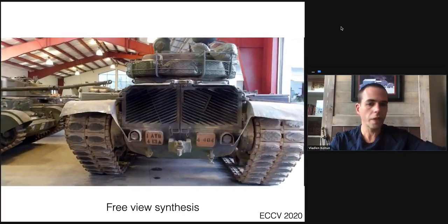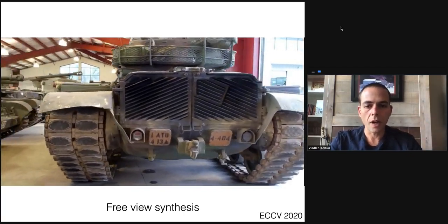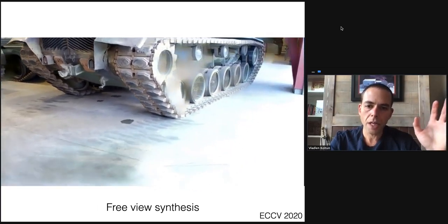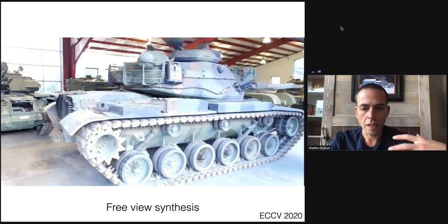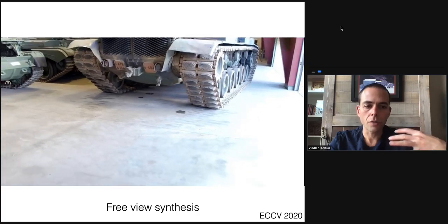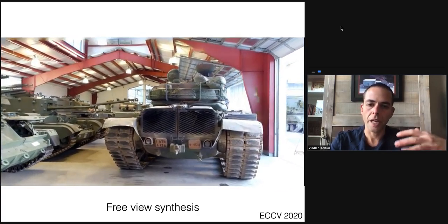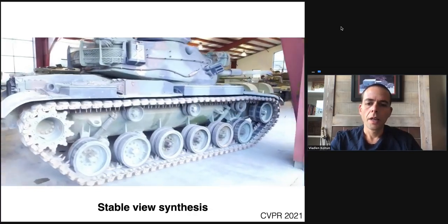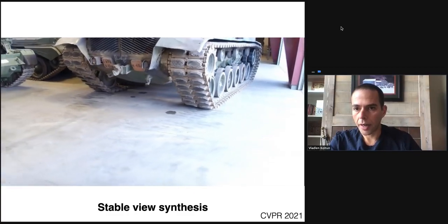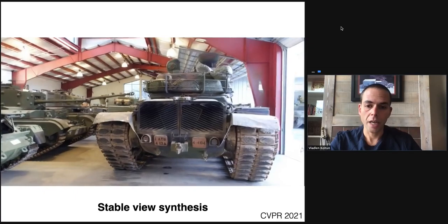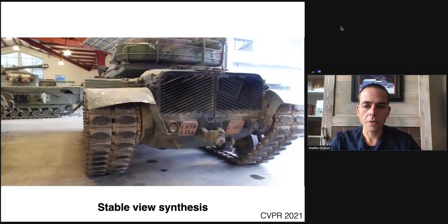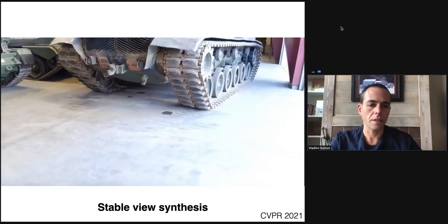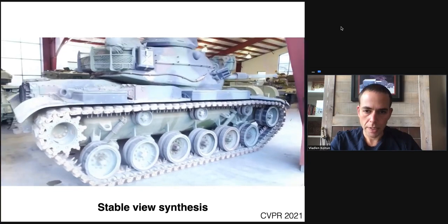You can see that it's not bad — we are moving through the scene, synthesizing appearance from entirely new viewpoints. But sometimes things go awry: some regions are not rendered or painted correctly, there is some temporal instability, and some regions are clearly missing. Here is Stable View Synthesis, the new work. It is much cleaner, much stabler, and the gross artifacts seen in the Free View Synthesis results are largely gone. You no longer have big missing regions in the foreground; the appearance is clean and temporally stable.